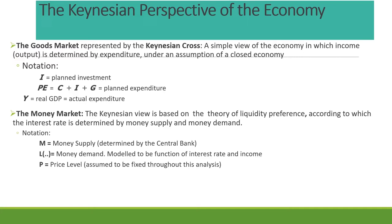On the money market side, the Keynesian view is based on the theory of liquidity preference. What it says is that the interest rate in the economy is determined by the interplay between money supply and money demand — that is the core of liquidity preference theory.